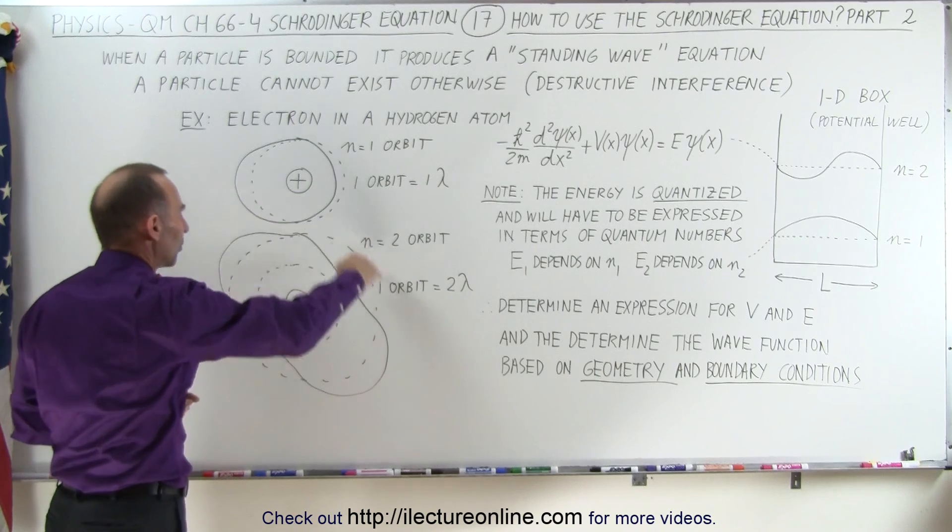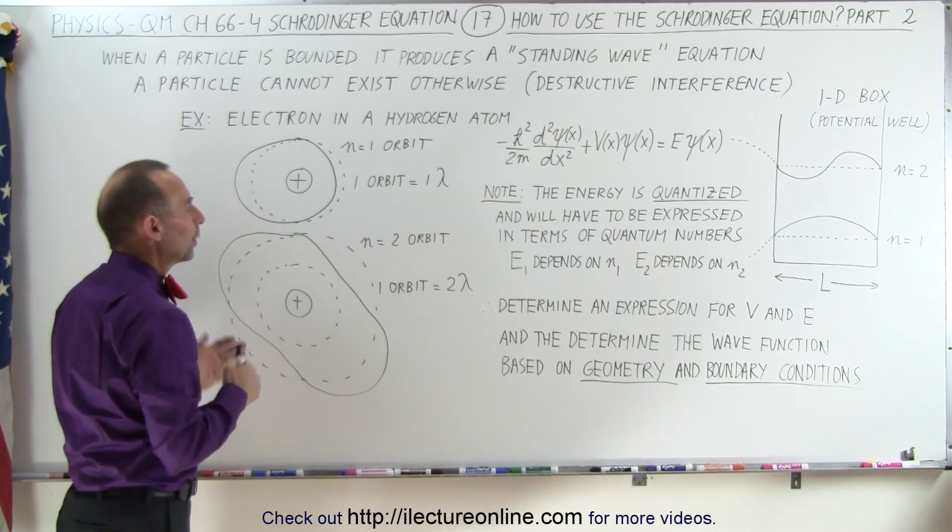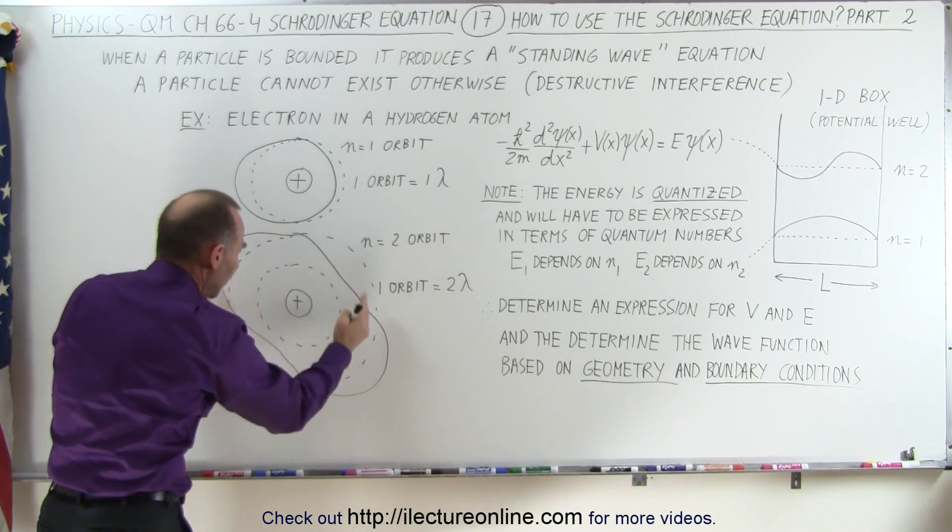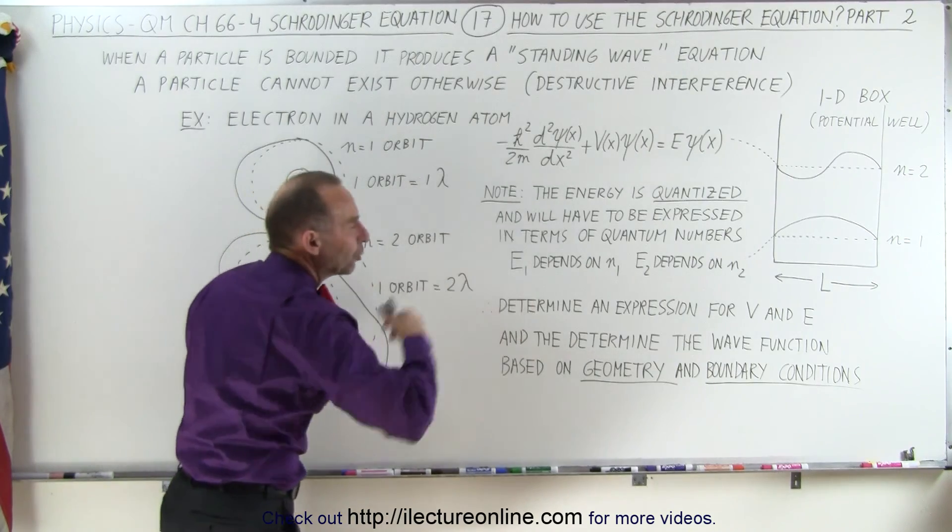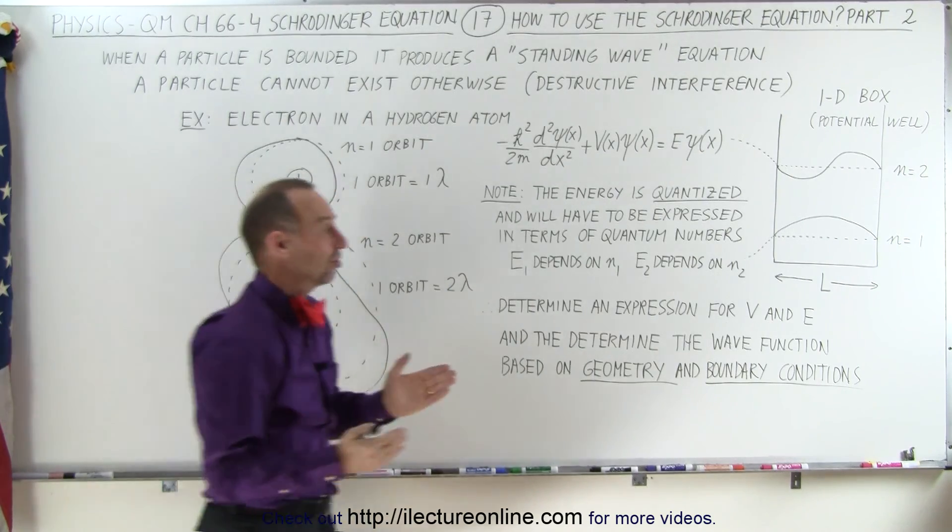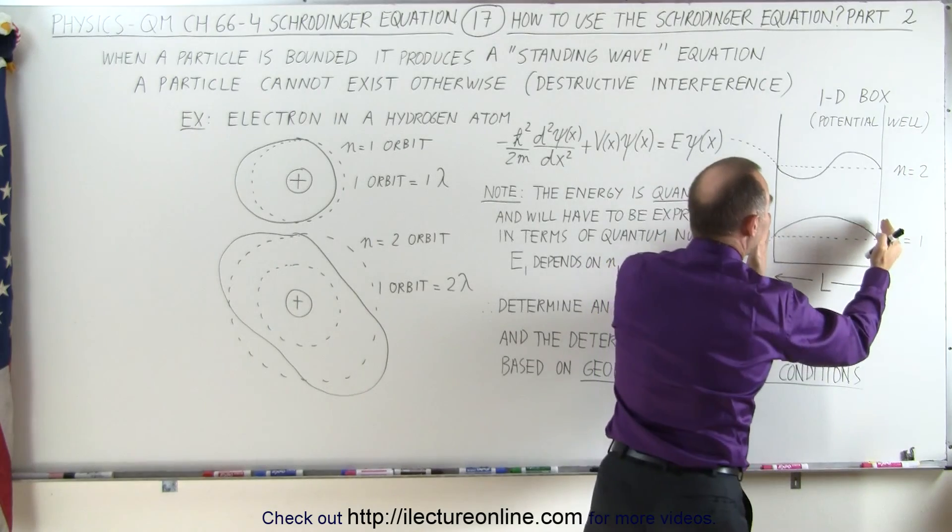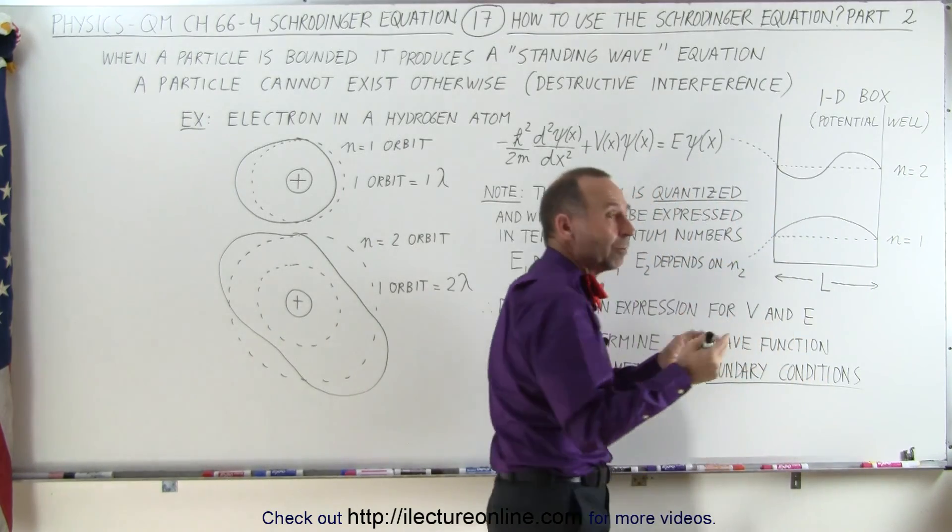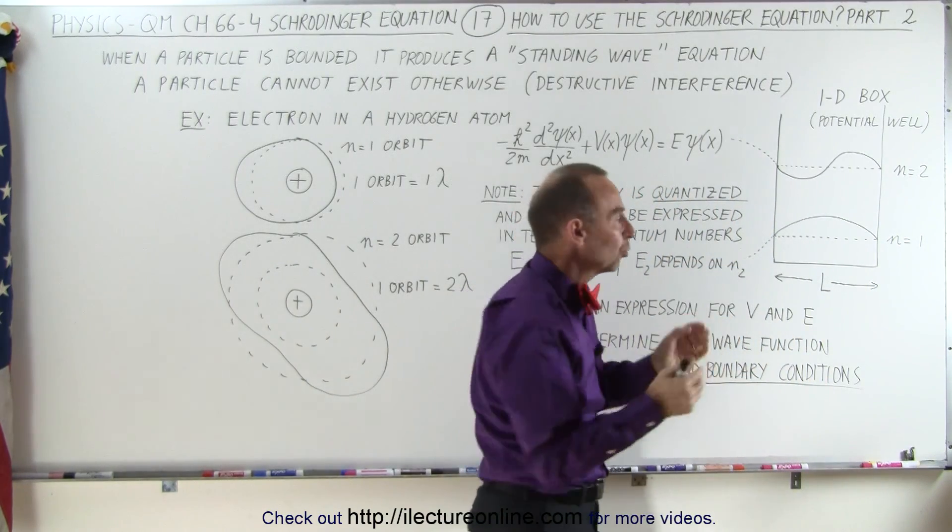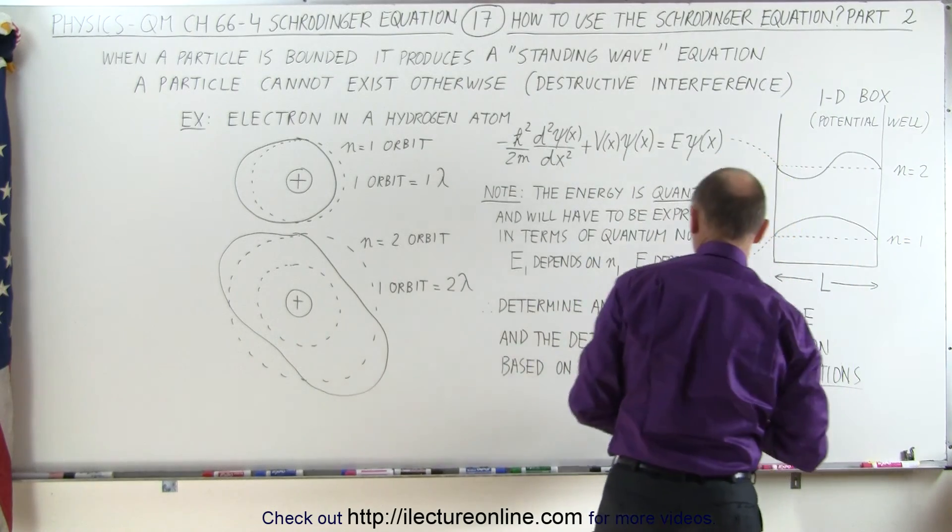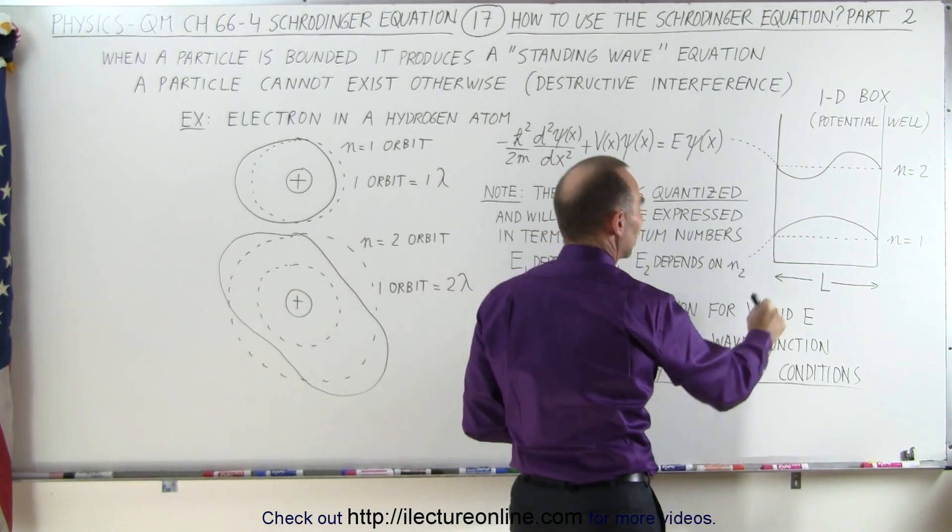So when a particle orbits around the nucleus, we can then say that the physical dimensions will determine how we find the wave equation. When the particle is limited to a one-dimensional box or a two-dimensional box, the limitations will give us what we need to know about the particle.